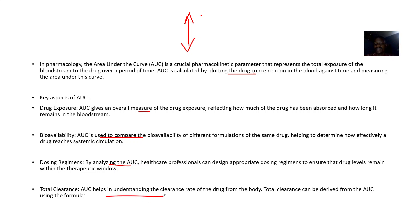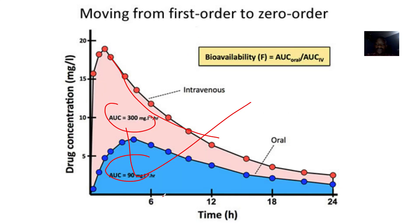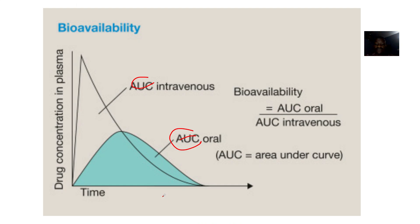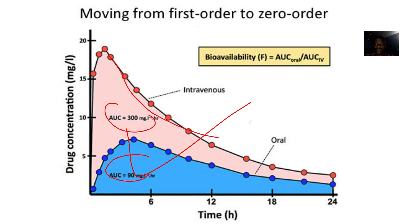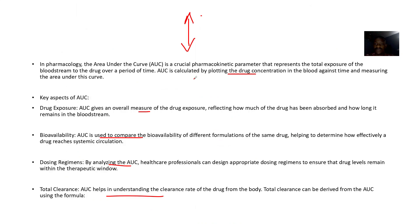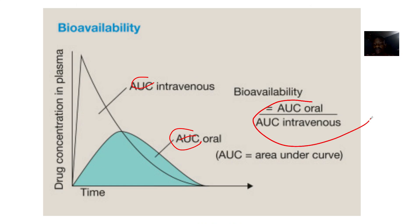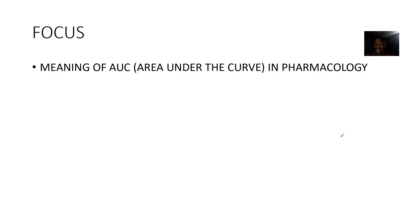Total clearance — it also helps in understanding the clearance rate of the drug from the body. Total clearance can be derived from the AUC formula. So this is what is meant by area under the curve — it means how much of that drug you took, how much of it got into the bloodstream.